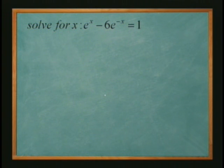All right, so let's take a look at this problem. We want to solve for x, we have e to the x minus 6e to the negative x equals 1. This one you can basically turn into a quadratic and solve it.